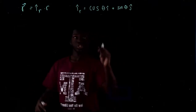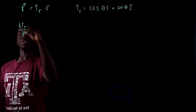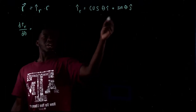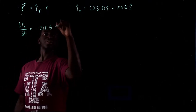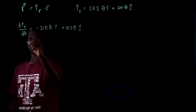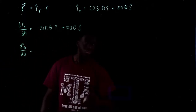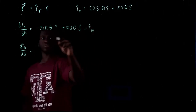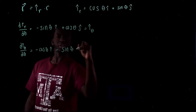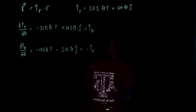After that, you take the derivative of both: dir/dθ and diθ/dθ. Using the chain rule, dir/dθ equals negative sine θ î plus cosine θ ĵ — that is iθ. Then diθ/dθ equals negative cosine θ î minus sine θ ĵ, which equals negative ir. As you can tell, this is just a negative version of ir. Those are the main things you're going to need.